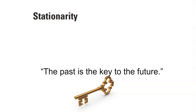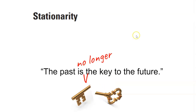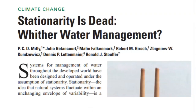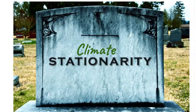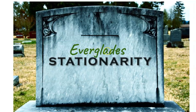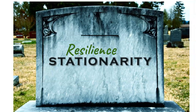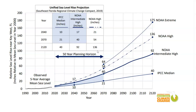Stationarity is the idea that we can use the past to predict the future, but thanks to climate change, the past rules no longer apply. But if the rules are changing going forward, how do you plan for it? I will argue that we need to take a non-stationary view not only of the climate but also the Everglades itself and its restoration. We need a non-stationary brand of resilience as we face climate change that can allow the system to respond in non-stationary ways.